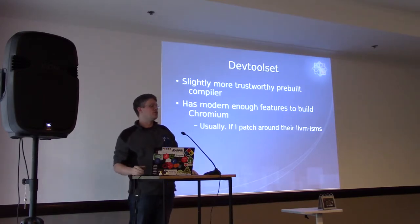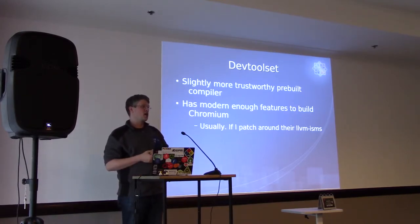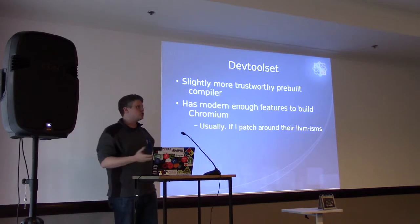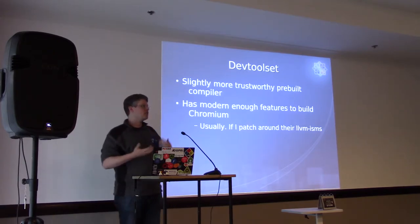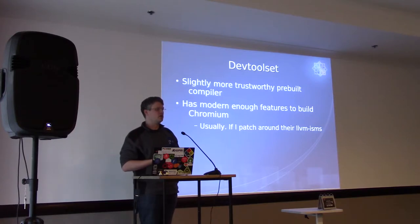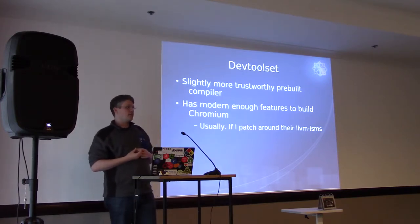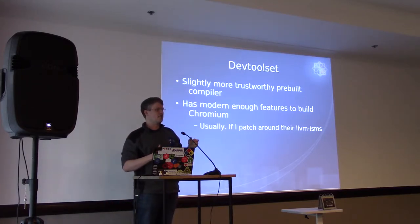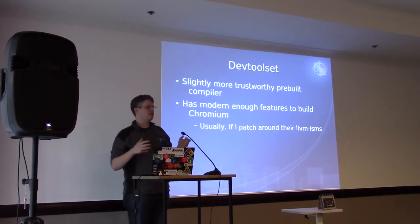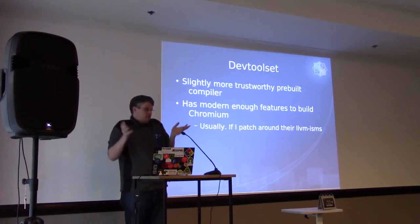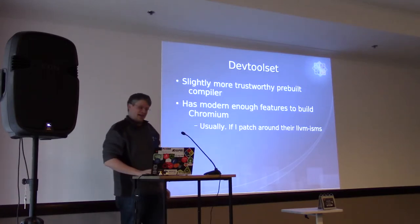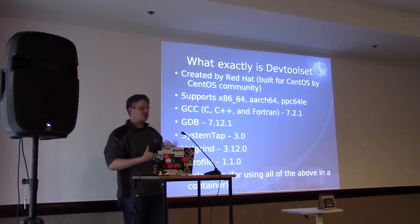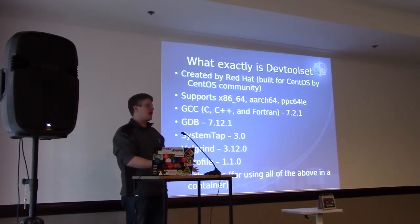I was aware of DevToolset but hadn't really ever used it. It has modern enough features to build Chromium, usually. Chromium has a lot of LLVM-isms built inside its code base — for example, they don't include CMath headers because somewhere in the LLVM toolchain it will drag those headers in automatically, and Google figured that out and told people in their style guide not to bother including the CMath header. DevToolset was created by Red Hat originally, but it's built for CentOS by the CentOS community.